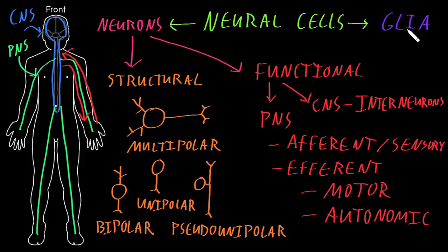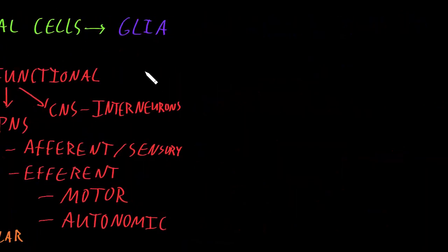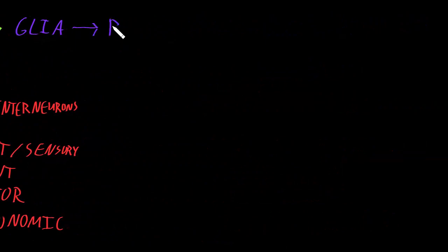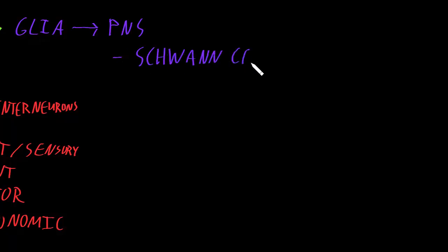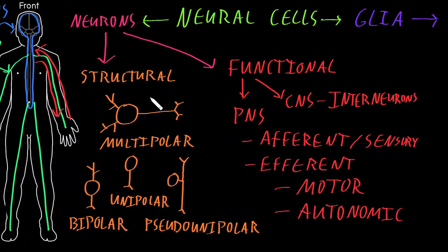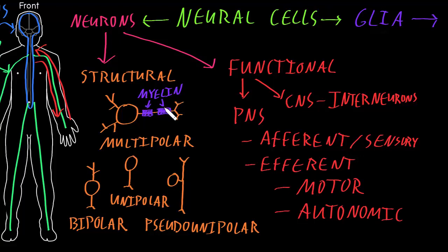The first glial cell I'll mention is found only in the peripheral nervous system, in the nerves spread throughout the body. All the other glial cells I'm going to talk about are found only in the central nervous system, the brain and spinal cord. In the peripheral nervous system, we have a type of glial cell called Schwann cells. Schwann cells help some kinds of neurons transmit information down their axons by wrapping an insulating material around them called myelin. The Schwann cells wrap around the axon, and their cell membranes contain this material called myelin — also called the myelin sheath — which helps these neurons transmit information down their axons.